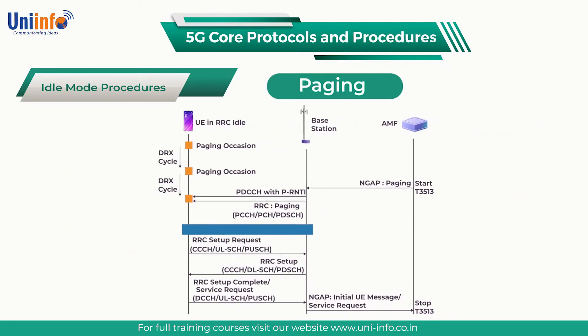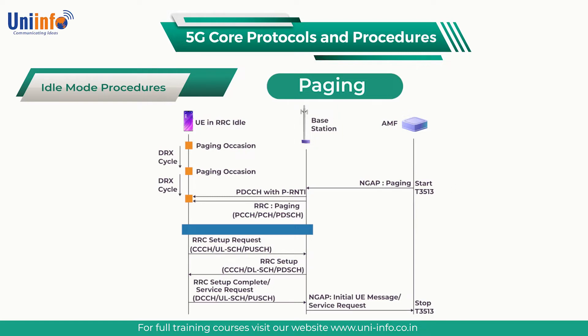The 5G paging procedure is not applicable to non-standalone base station architecture option 3, which is based upon a 4G anchor base station providing control plane connectivity to the 4G core network. In that case, the UE camps on the 4G system in RRC idle mode and the 4G paging procedure is applicable.